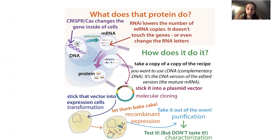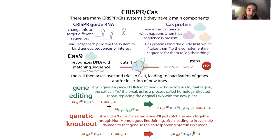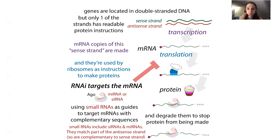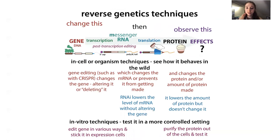You can also use RNA interference — RNAi — introducing small RNAs that direct an Argonaute protein to the messenger RNA (not to the DNA itself) to cut and degrade those messenger RNA copies so the protein can't be made. Here you're not making permanent changes, but you are making changes at the level of the mRNA. This lets you see what a specific protein was doing, though you're not introducing an actual change in the protein sequence — you're looking at what happens when the protein is absent.